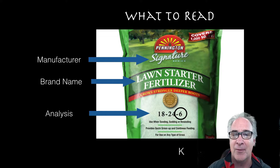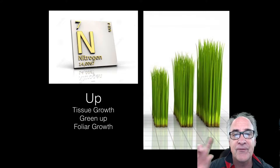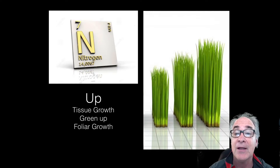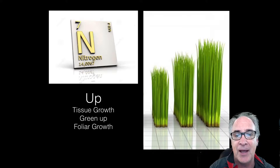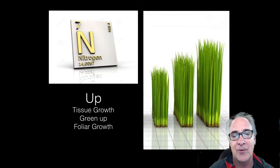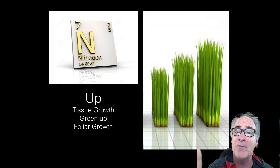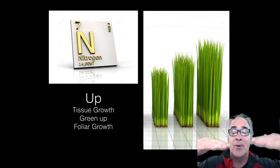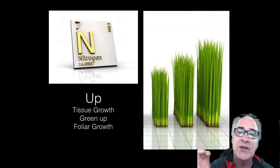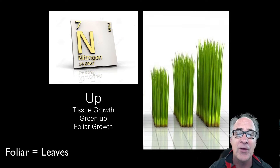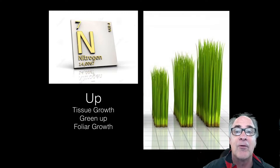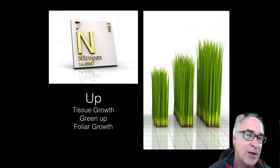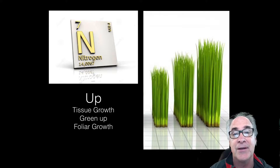Let's take a look at each one of the elements and see what they do. The first letter on a fertilizer label is nitrogen. I remember this with a rhyme: up, down, and all around. N would be up — nitrogen takes care of all the things up or above the soil surface. All the tissue growth that takes place, in particular the foliar growth, that's what nitrogen is responsible for. So nitrogen is responsible for all the foliar growth, the vegetative growth — tissue, green up, and foliar growth. That's what the 'up' is about for nitrogen.